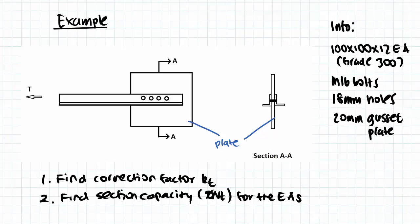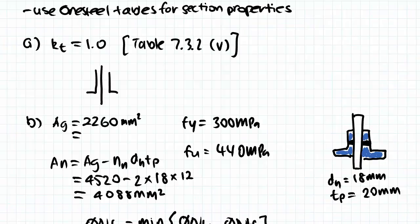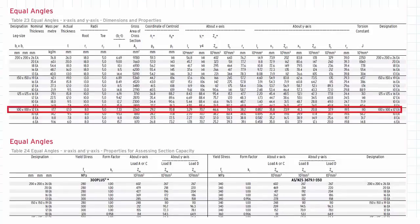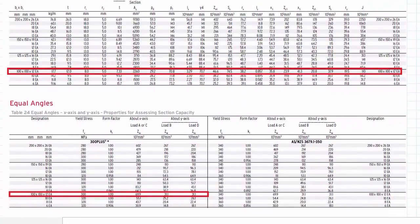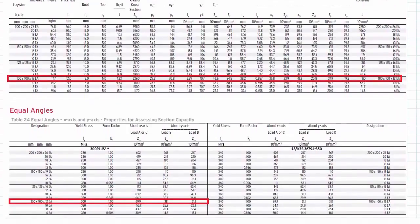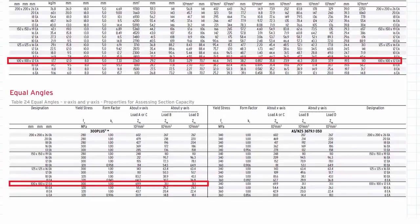So moving on, when we do these questions it is important that we need to refer back to the one steel tables for section properties. And the one steel tables look something like this where there are two major tables. The first one will be about dimensions and properties, whilst the second one will be about the section capacity and stress.